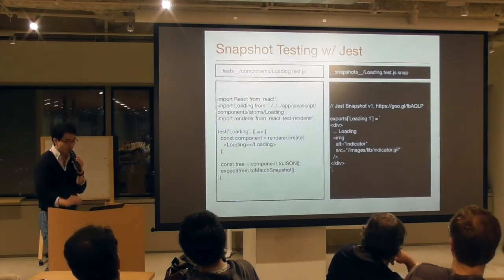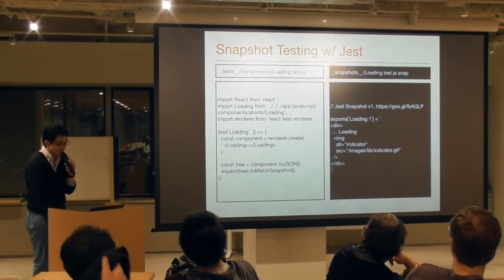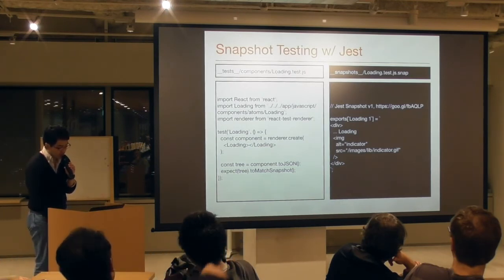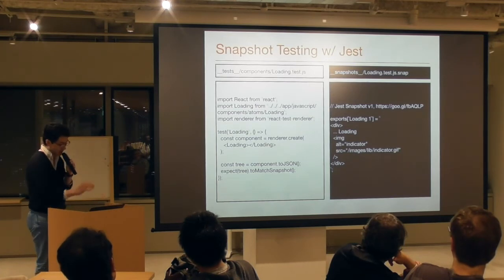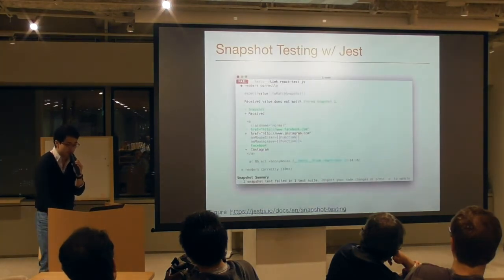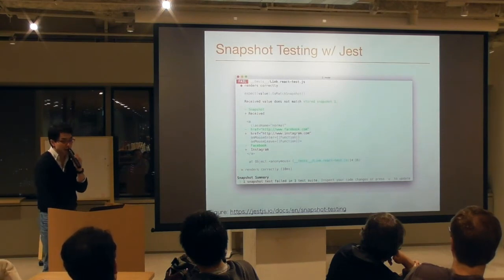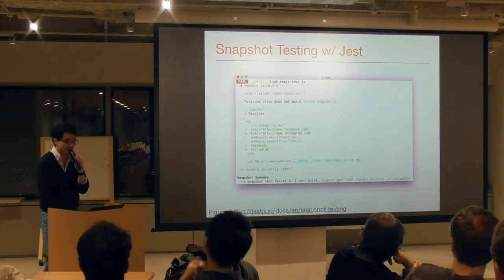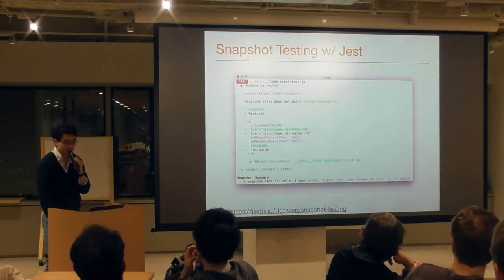What is snapshot testing? Snapshot tests are very useful whenever you want to make sure your UI does not change unexpectedly. Once you write a snapshot test — like the example on the left — a snap file is generated, as shown on the right. These snap files should be tracked by Git. If the snapshot changes, the test will fail. Jest will ask you whether the change is intentional or not. The problem is you cannot test complex events with Jest; for complex user events you have to write feature specs or integration specs.